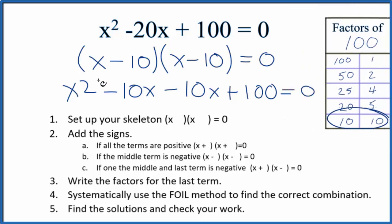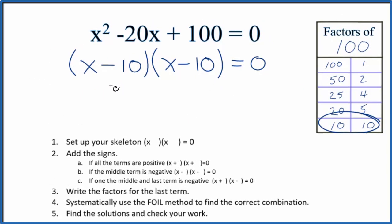If we look at this, x squared and then minus 10x plus minus 10x, that's the minus 20x. So this is done correctly. Now we need to find the solutions and check our work.